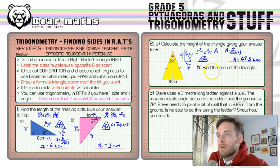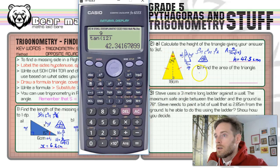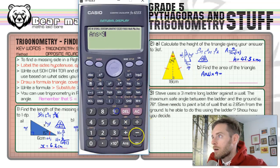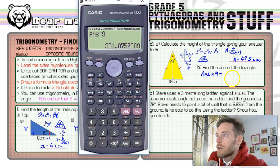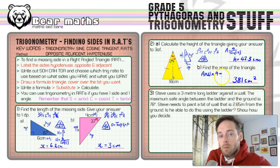Now the area is very easy to find. It's just half the base times the height. We've got the height, and half the base of the whole isosceles triangle is 9 centimetres. So we take our answer of 42.3 and multiply by 9. That gives 381, and to three significant figures that's 381 centimetres squared. It's just an appropriate use of trigonometry that sees you through a problem like that.